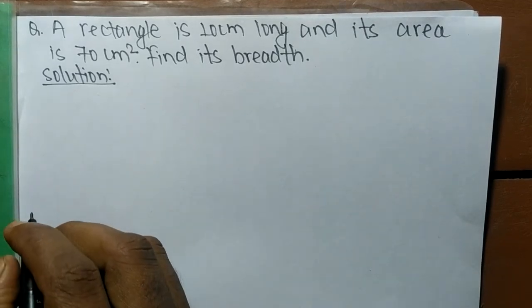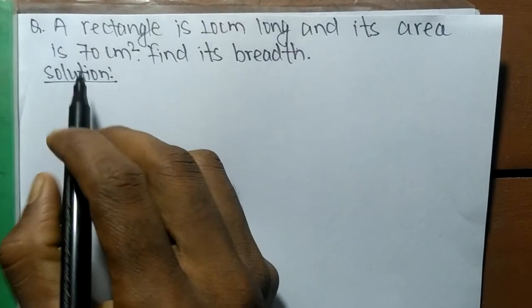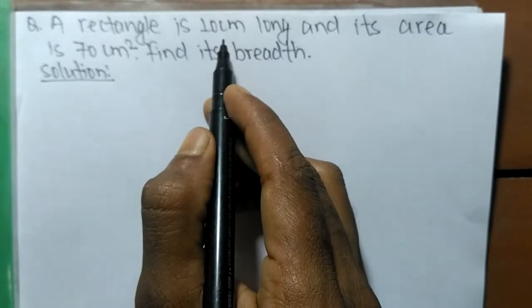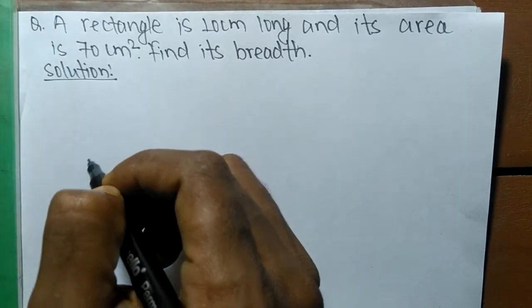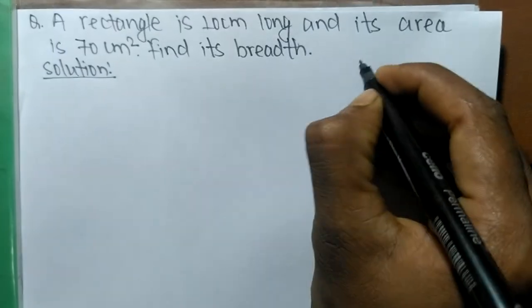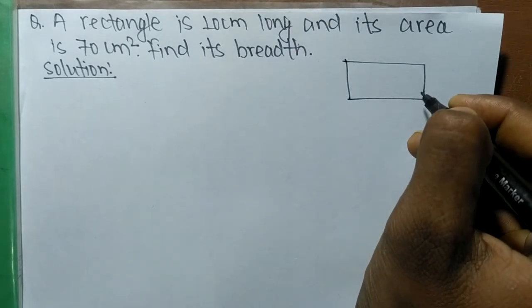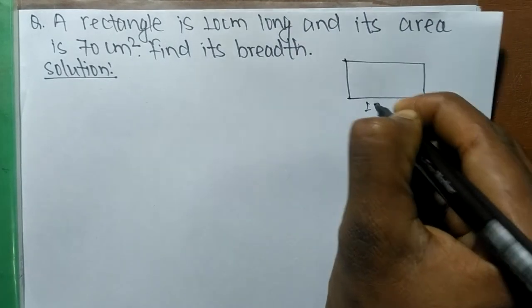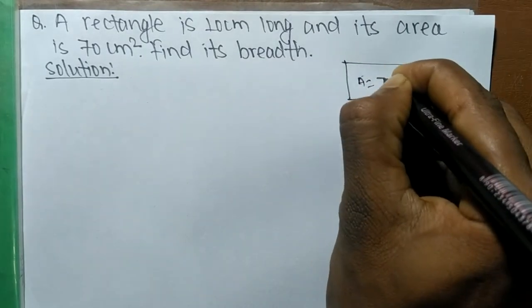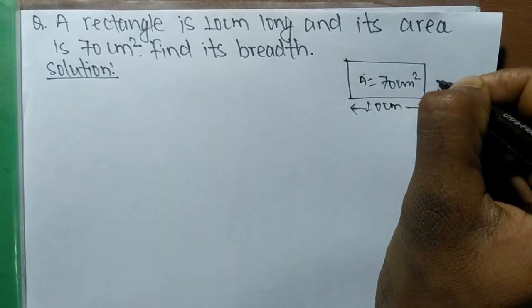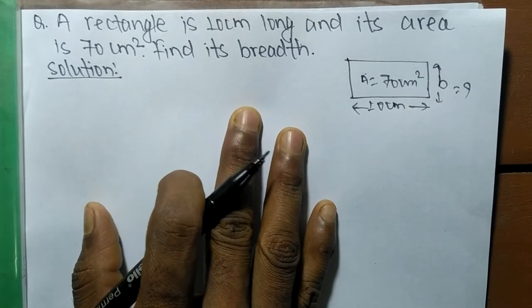Today in this video we are going to solve a word problem in mathematics. The question is: a rectangle is 10 centimeters long and its area is 70 centimeters square — find its breadth. Here is a rectangular shape, and the structure of this rectangle is 10 centimeters long with an area of 70 centimeters square, and we have to find out its breadth.